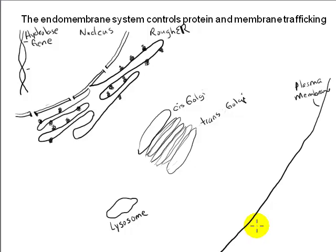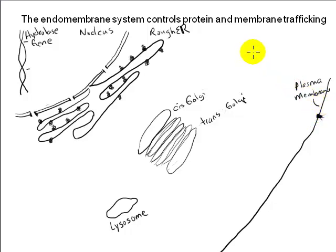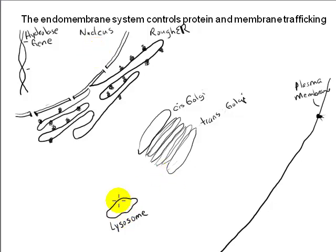The rough ER is the site of protein synthesis for specific types of proteins — those destined to be secreted outside the cell, sent to a specific cellular organelle like the lysosome, or that are embedded within membranes such as a cell surface receptor. So how does this work, and how does the cell know the destination of a given protein? It turns out that this information is encoded in the amino acid sequence of the protein itself. Let's look at a specific example: a hydrolase enzyme that is destined to reside in the lysosome compartment.